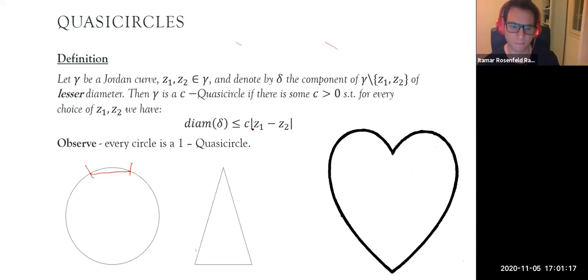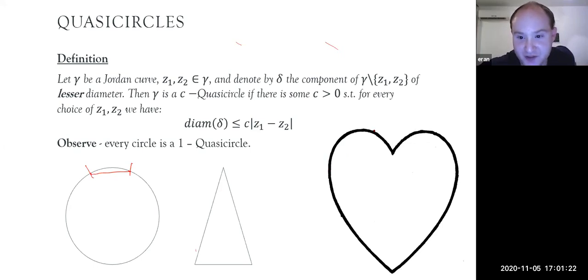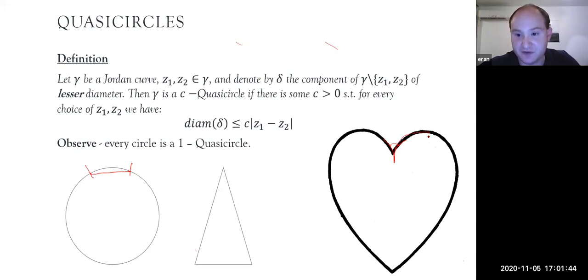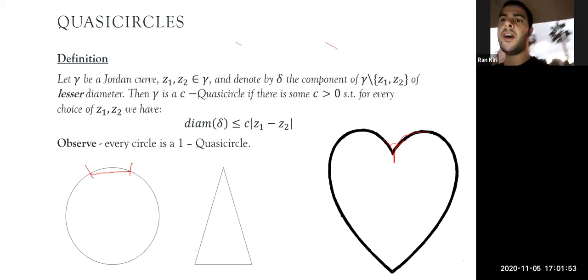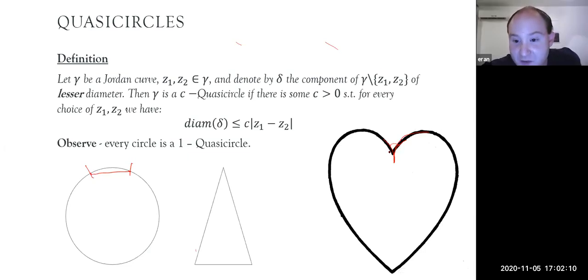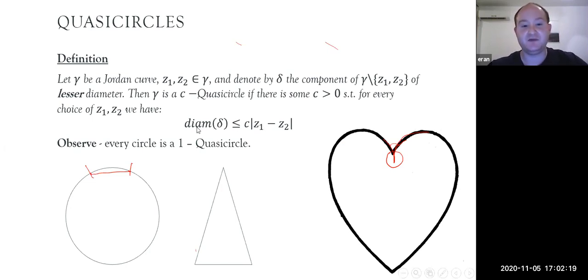Now consider the cardioid: if the angle at the tip is zero, does this boundary curve define a quasi-circle or not? The answer is no: if you take two points closer and closer to the cusp, the constant C blows up, so this condition simply cannot hold there.